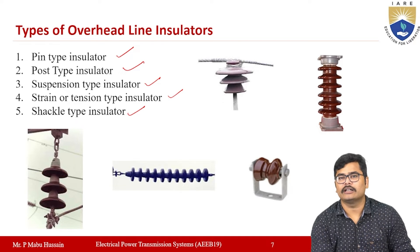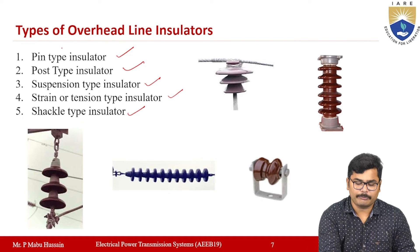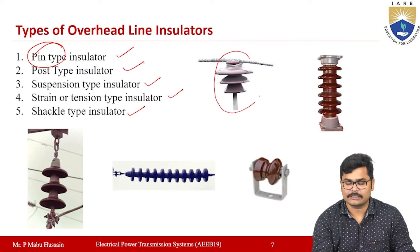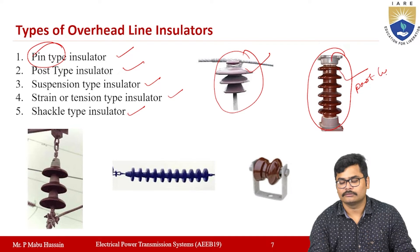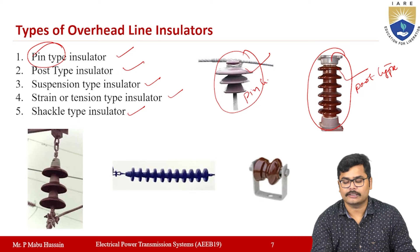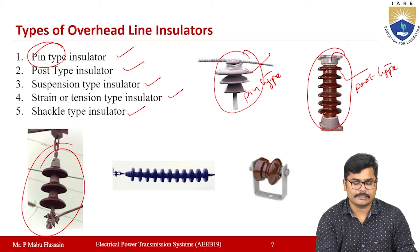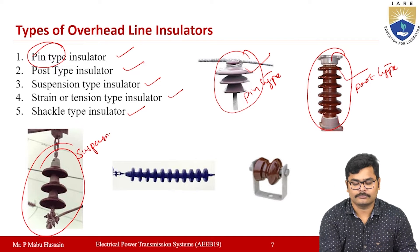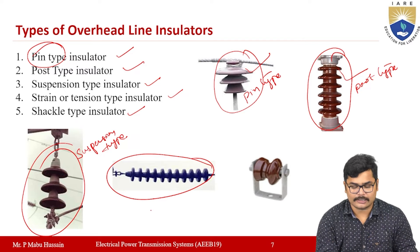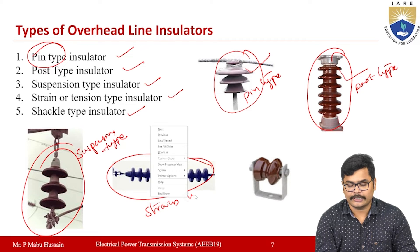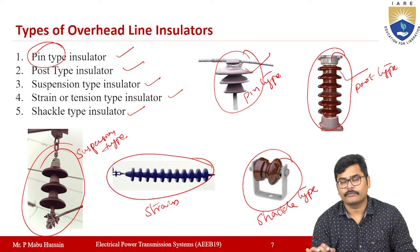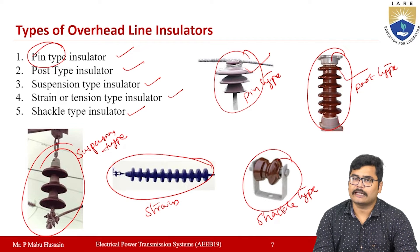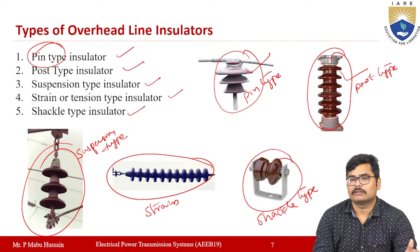If you observe the figures, the pin type insulator looks like the first figure, and the post type insulator is shown in another figure. One is the suspension type insulator, another is the strain type or tension type insulator, and another is the shackle wheel type insulator. These are the main types used in transmission line systems, and we will discuss each of them.